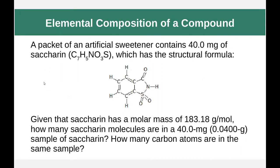Let's make this more complicated. A packet of artificial sweetener contains 40 milligrams of saccharin, which has a molar mass of 183.18 grams per mole. How many saccharin molecules are in a 40-milligram sample? We first convert 40 milligrams to 0.04 grams. We divide by the molar mass to get moles, then multiply by 6.022 times 10 to the 23rd molecules per mole, giving us 1.31 times 10 to the 20th saccharin molecules. The second question asks how many carbon atoms are in that sample — we can count seven carbon atoms per saccharin molecule.